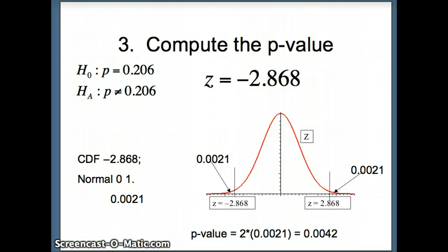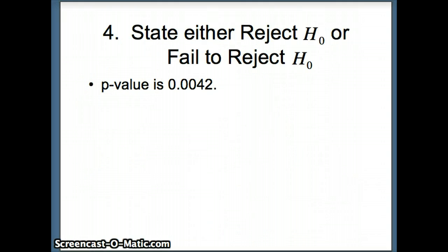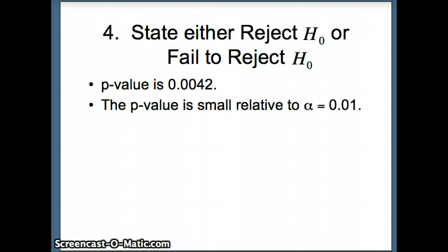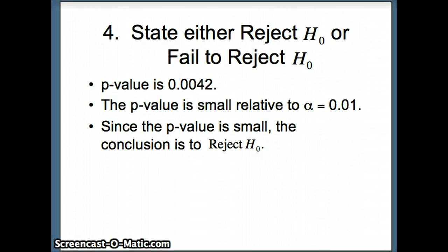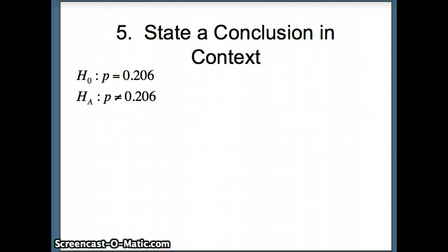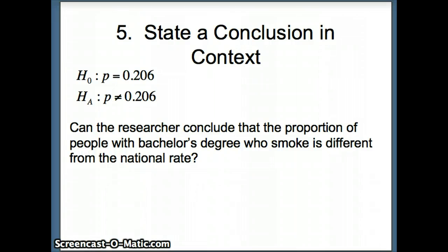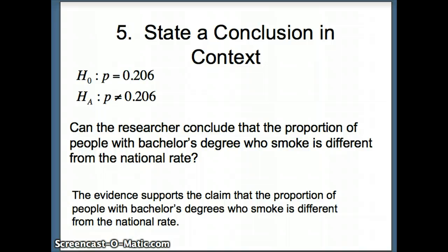The P-value is 0.0042. We set alpha = 0.01 at the start, and 0.0042 is smaller than 0.01, so we reject H₀. Stating the conclusion in context: the evidence supports the claim that the proportion of people with bachelor's degrees who smoke is different from the national rate. That concludes this presentation.